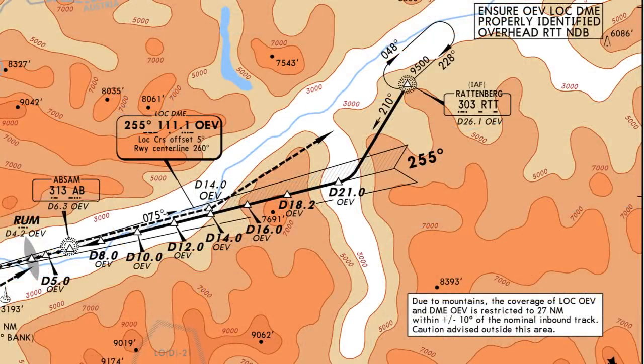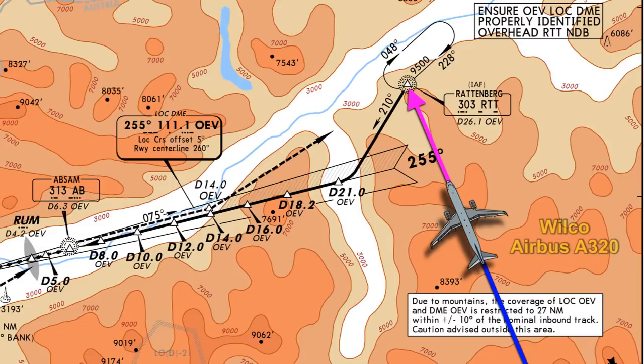For this approach we're going to use the Wilco Airbus A320. We'll be coming from the south, descending down to 9,500 feet just a few miles before the Rathenburg NDB, and then we'll do the rest of the approach. Let's get ourselves in the airplane and fly this approach.